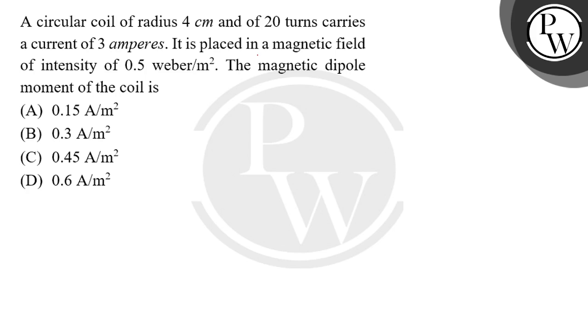So very simple question, students. As we know the formula of magnetic field, we can represent the magnetic dipole moment with small m. The magnitude of magnetic dipole moment is given by the formula n into i into A.